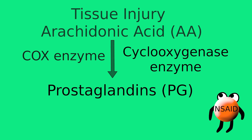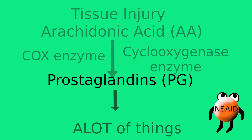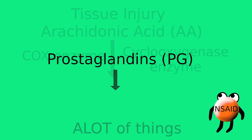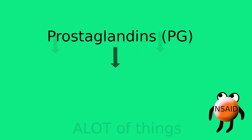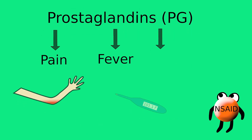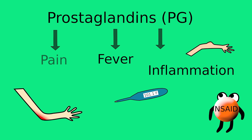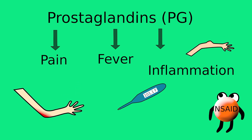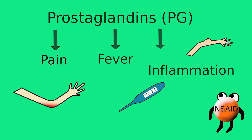Prostaglandin does a lot of things. Three things that it does is cause pain, fever, and inflammation. These are ways that your body tells you that something is wrong and needs your attention. Without these signals, you may not notice your injury, and as time goes, it can get worse, become infected, and can even put you in a hospital.